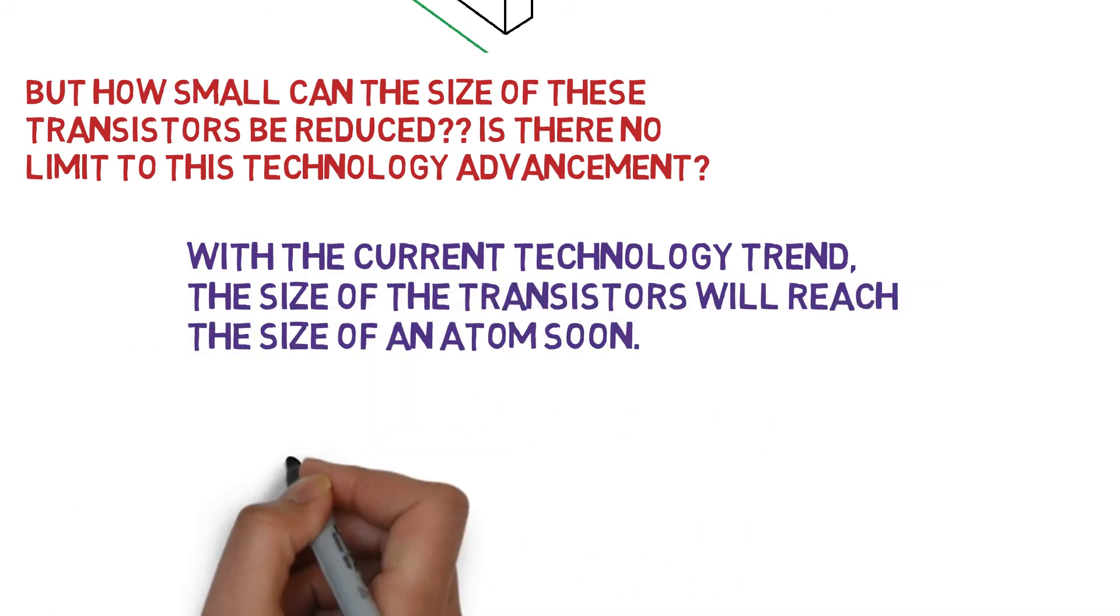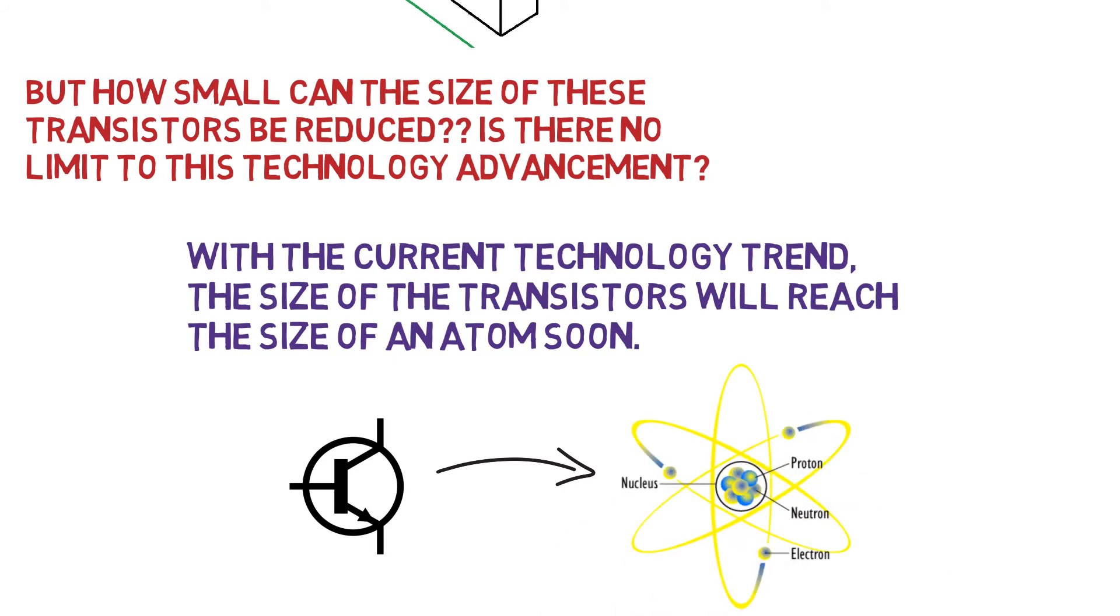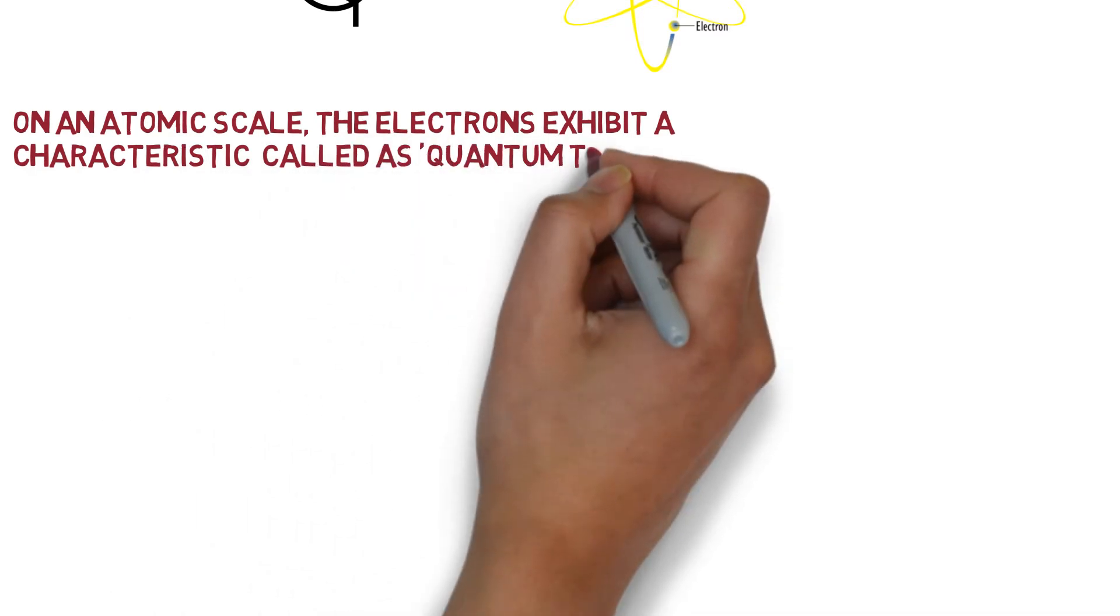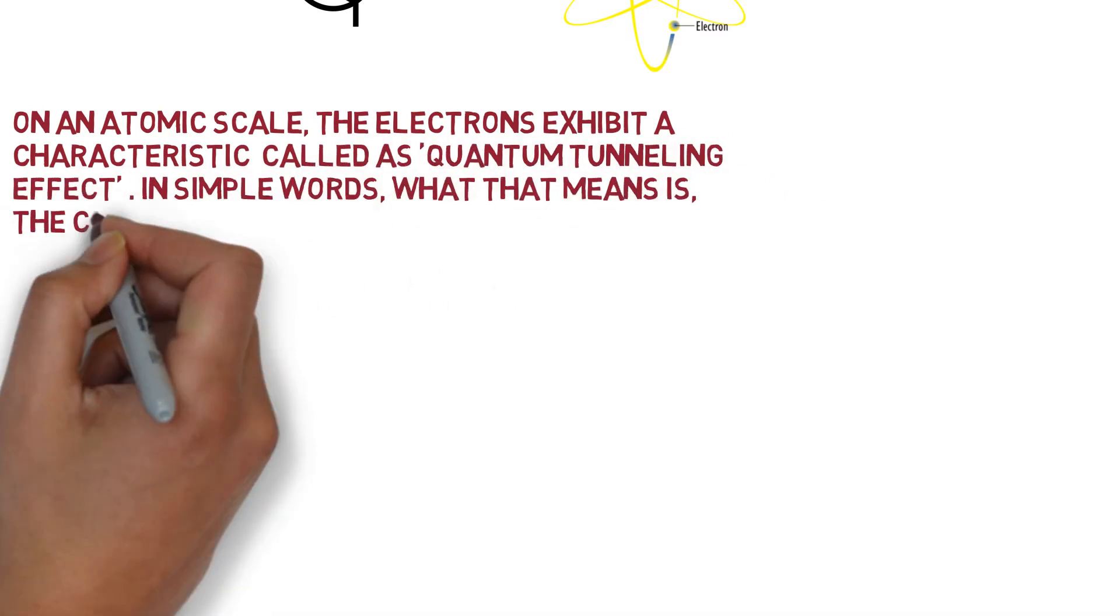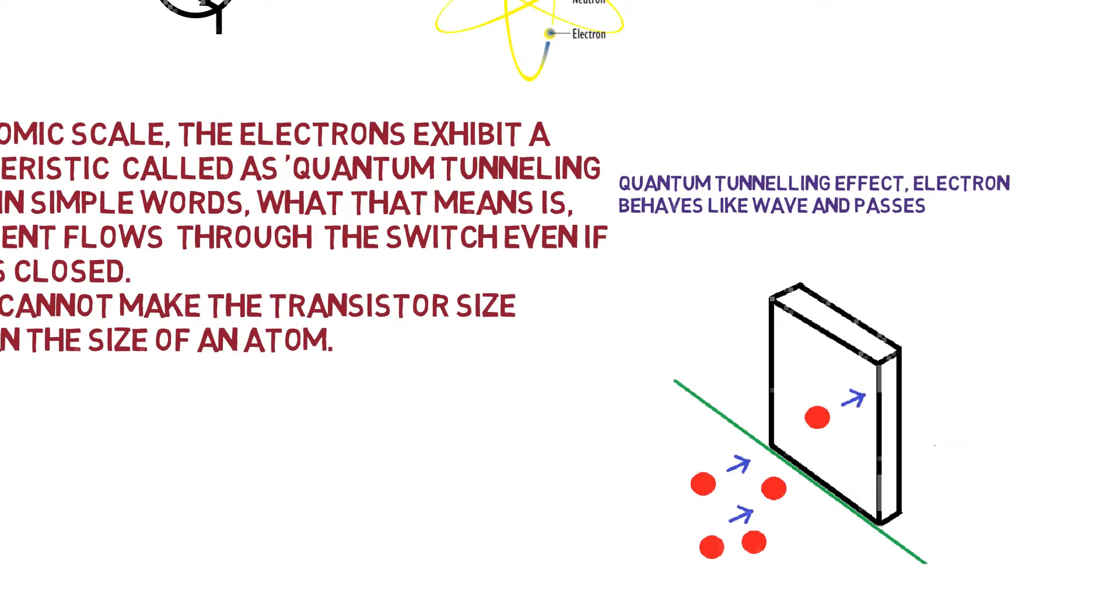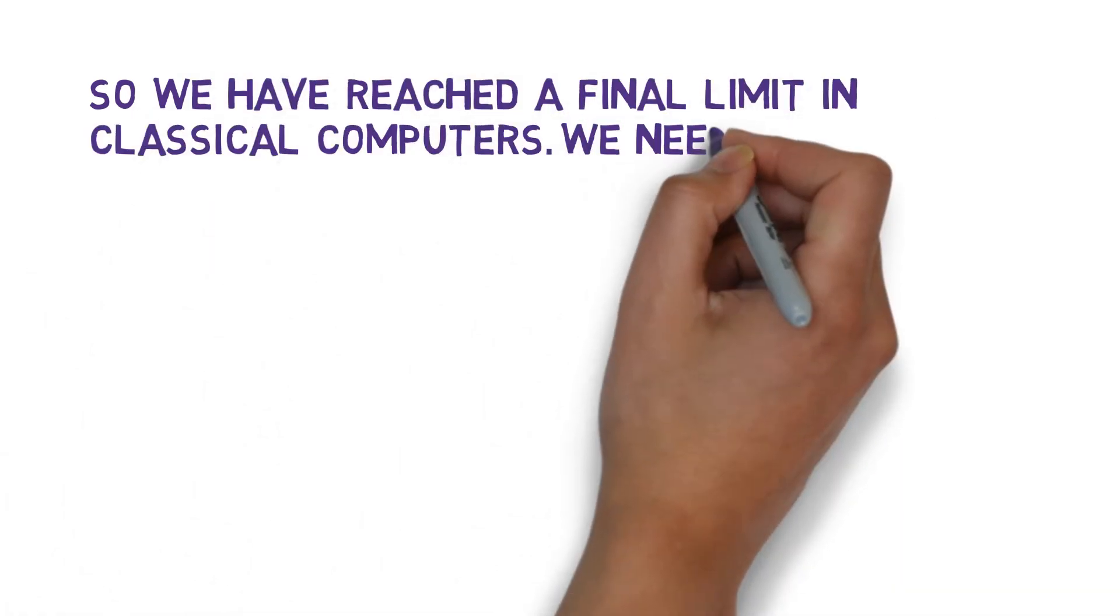With the current technology trend, the size of the transistors will reach the size of an atom soon. On an atomic scale, the electrons exhibit a characteristic called the quantum tunneling effect. In simple words, what that means is the current flows through the switch even if the switch is closed. Thus we cannot make transistor size less than the size of an atom. So we have reached a final limit in classical computers.